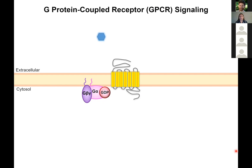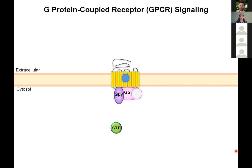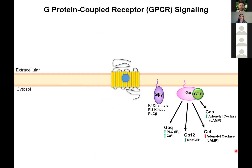Upon ligand binding to the receptor, you have engagement of the G-protein by the receptor, which stimulates the release of GDP and subsequent binding of GTP. This activates the G-protein to cause functional dissociation so that the obligate dimer of G-beta-gamma and the G-alpha subunit can then go act on their respective effector enzymes. Depending on which class of G-protein you have, you can get a range of different signals arising.